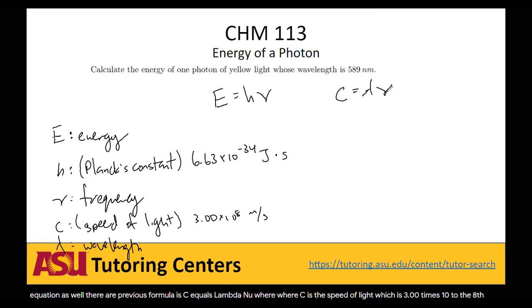So we'll have to use this equation because we don't know what nu is, but we do know what lambda is. So we can actually solve for nu up here. Nu equals the speed of light divided by the wavelength, right? If we just divide lambda over.